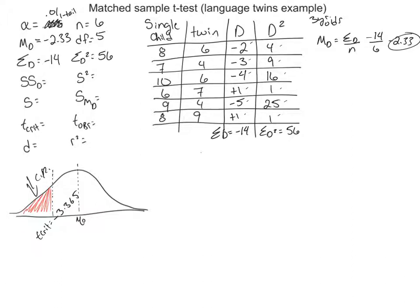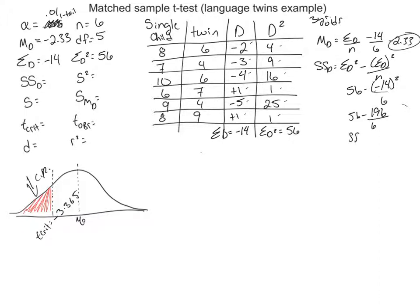Now we can find the sum of squares. The sum of squares for the difference is the sum of D-squared minus the sum of D, squared, divided by n. We have 56 minus 14-squared divided by 6, or 56 minus 196 divided by 6, giving a sum of squares difference of 23.33.